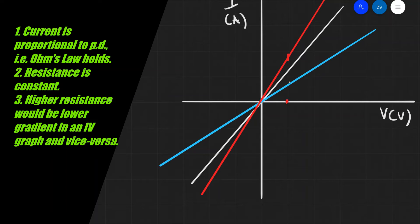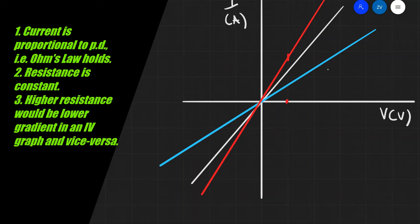So to summarize, the IV characteristics of a resistor show that resistors obey Ohm's law because the graph is a straight line through the origin — current is directly proportional to potential difference. The gradient is directly connected to resistance: a lower gradient means a higher resistance.